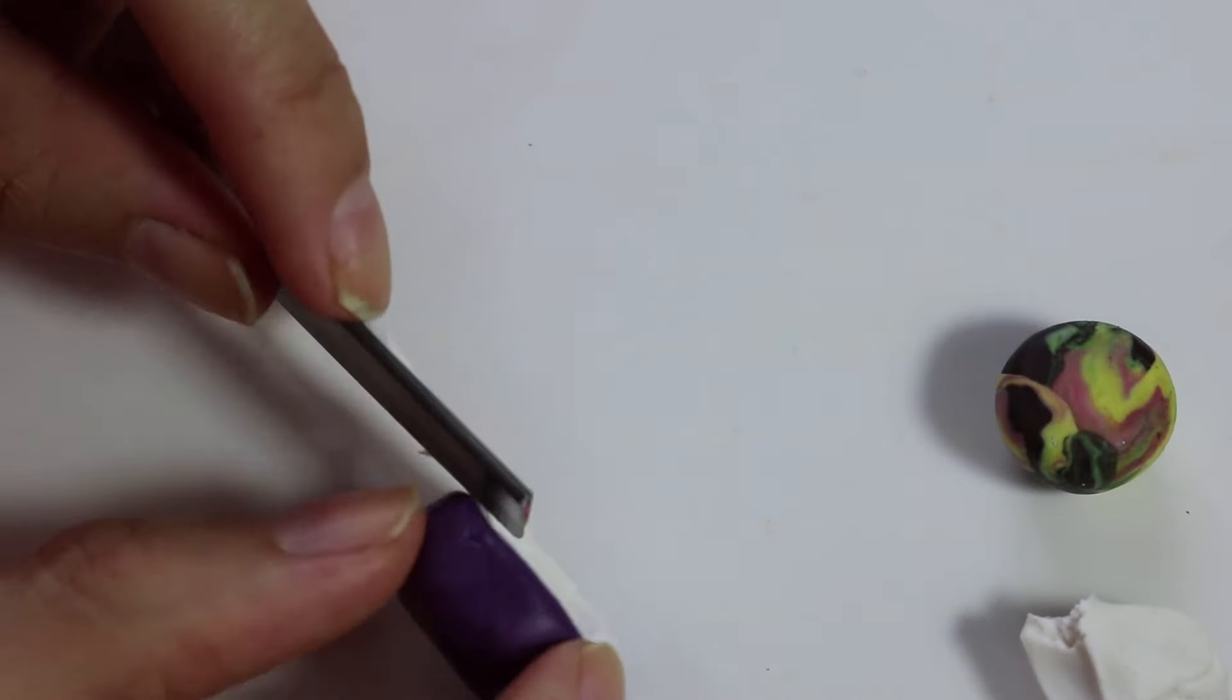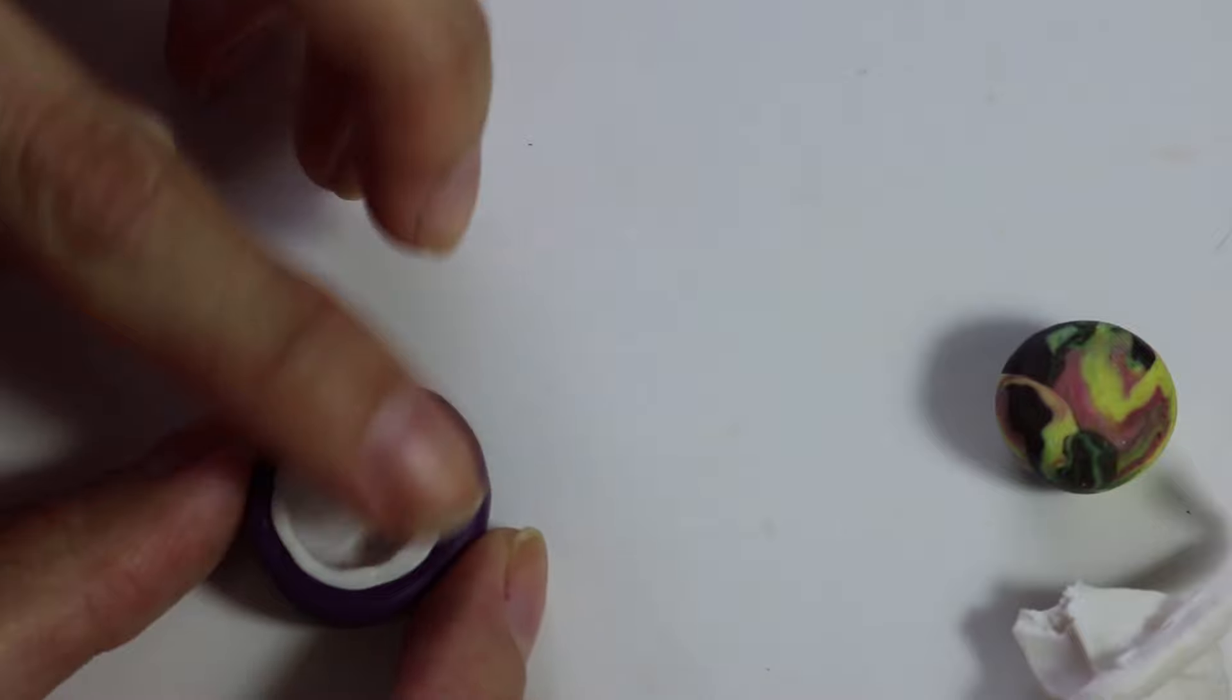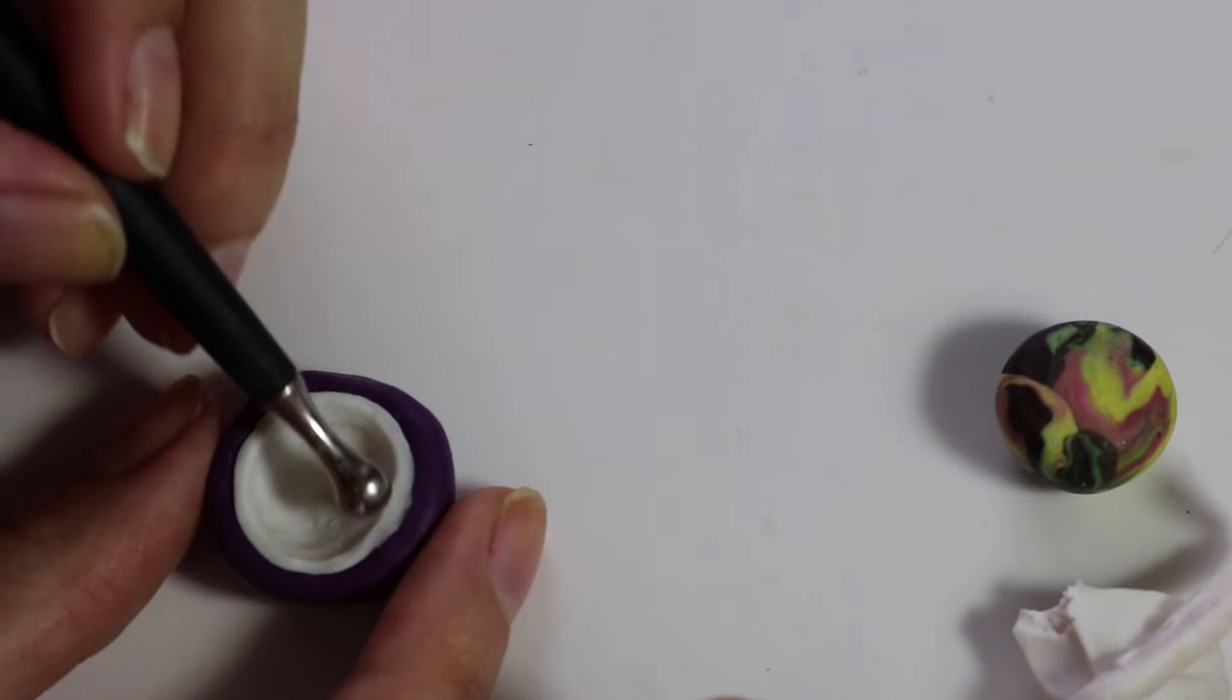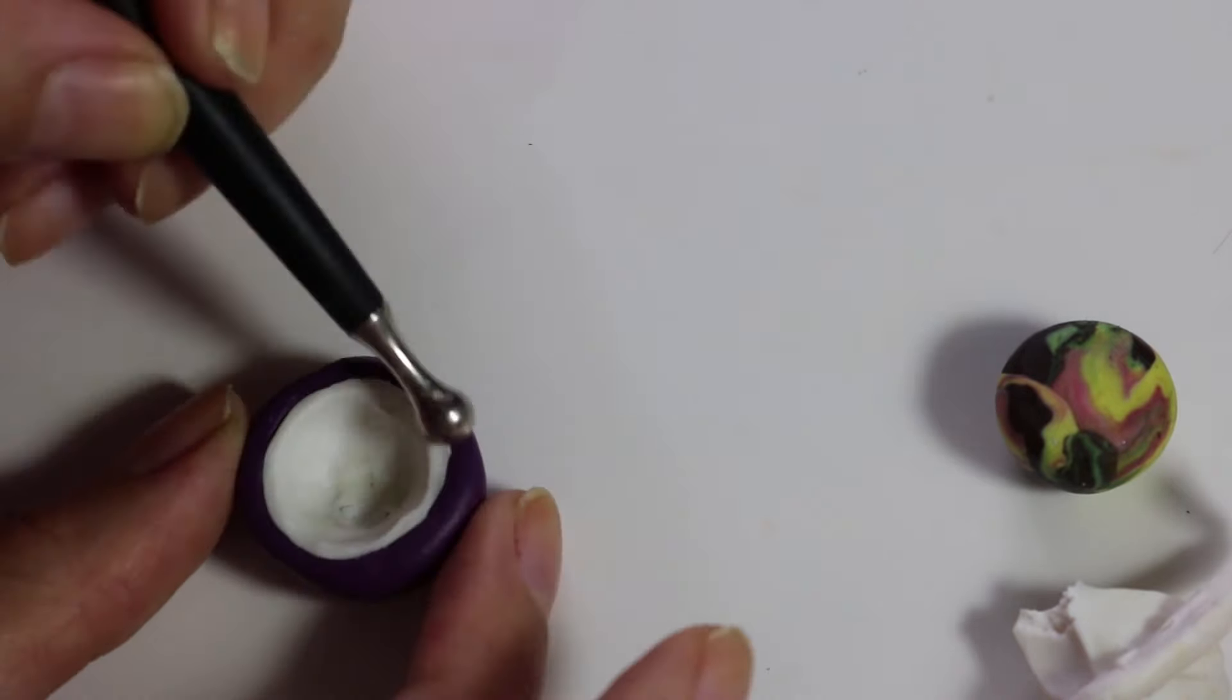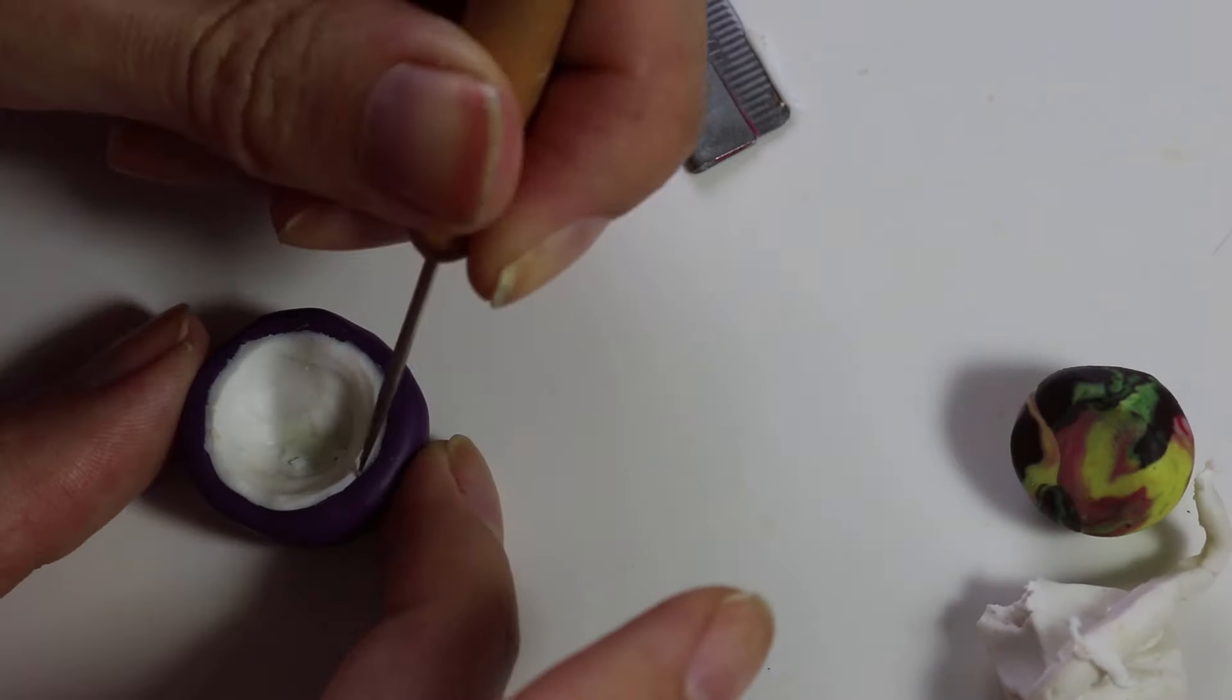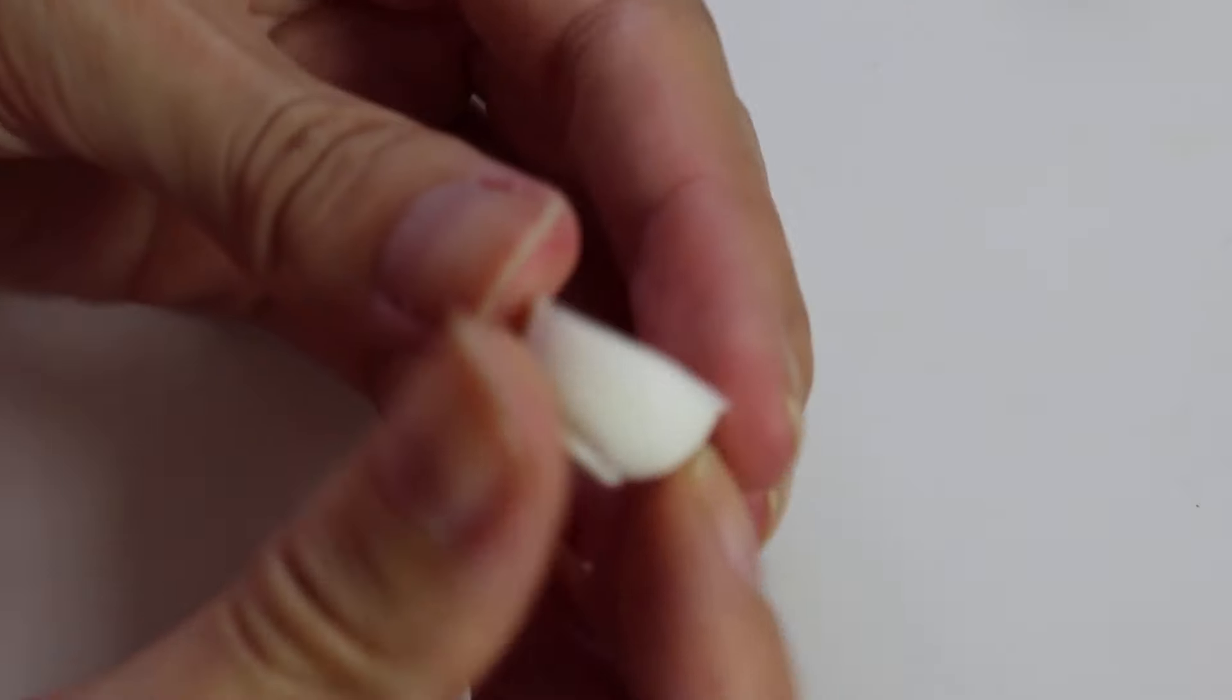So back to the bowl. So I'm using some white clay and I'm using a very large dotting tool and then just pushed it in place and then cutting off the excess and then just working with it a little bit more until you're happy with how it looks and then you can bake that. So once you're done this is what your bowl look like.